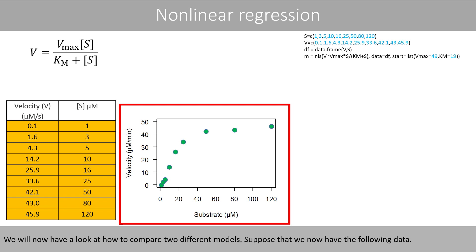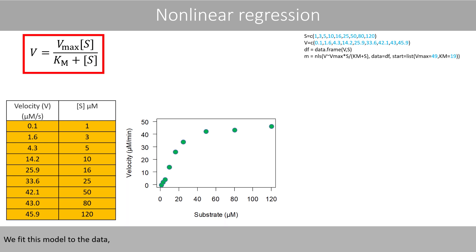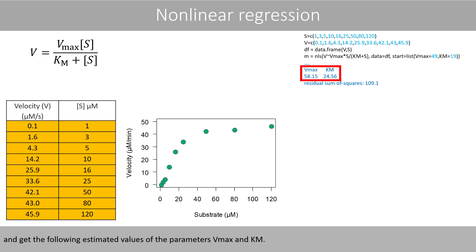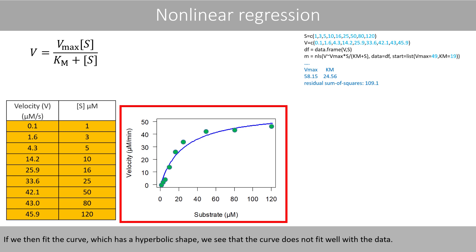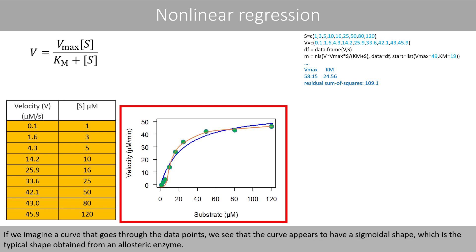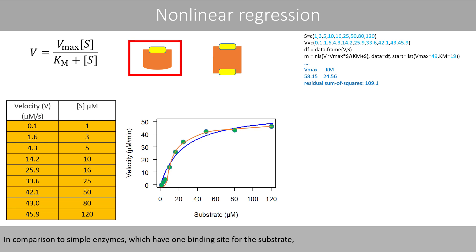We will now have a look at how to compare two different models. Suppose that we now have the following data. We fit this model to the data and get the following estimated values of the parameters Vmax and Km. If we then fit the curve, which has a hyperbolic shape, we see that the curve does not fit well with the data. If we imagine a curve that goes through the data points, we see that the curve appears to have a sigmoidal shape.